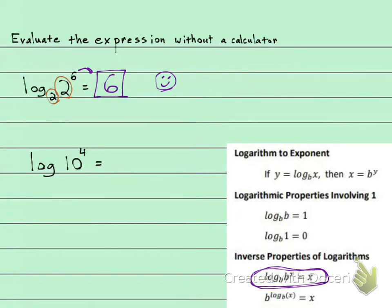Now we have log of 10 to the fourth. We're going to use the same inverse property — I'm circling it in orange. What you need to know here is that you don't have a base written down underneath the log, so it's understood to be 10.